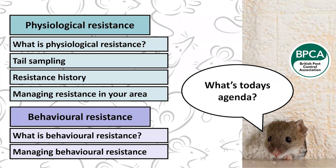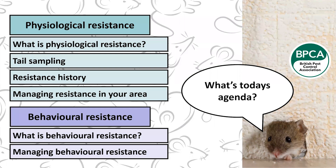The agenda for today: we're mainly going to talk about the two main types we come across — physiological resistance and behavioral resistance. We'll look at what physiological resistance is, talk about tail sampling and how that works, look at the resistance history and where it came from, then managing resistance in your area. We'll then touch on behavioral resistance — what it is and how to manage it.